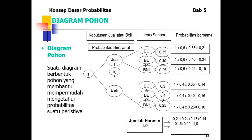Selanjutnya, diagram pohon. Diagram pohon adalah suatu diagram berbentuk pohon yang membantu mempermudah mengetahui probabilitas suatu peristiwa. Contoh keputusan jual-beli jenis saham: jual — BC 0,35, BL 0,40, BNI 0,25; beli — BC 0,3, BL 0,4, BNI 0,25. Jumlah probabilitas harus 1,0.